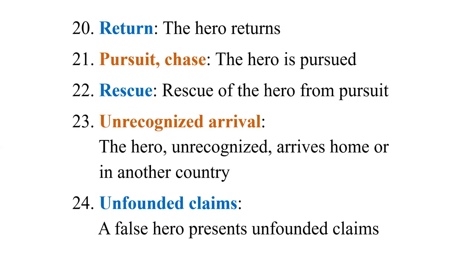Then the twenty-third: Unrecognized Arrival — the hero comes back to the land, unrecognized, in the form of a servant, maid, or cook. They don't reveal their identity; the hero is in disguise and arrives home. Then when the hero is back, he finds out there is someone who pretends to be the hero, who claims 'I was the one who rescued your daughter. Princess, marry off your daughter to me.' Unfounded Claims — a false hero presents unfounded claims, while the real job was done by the true hero.